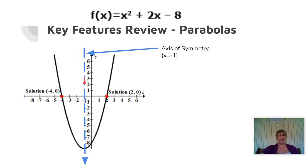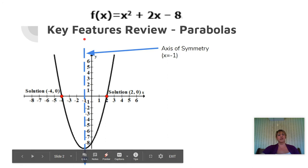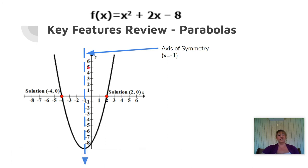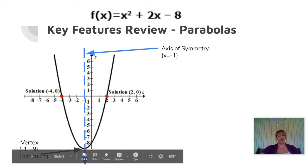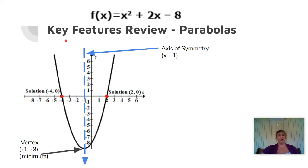Just to review: parabolas have in the middle what we call the axis of symmetry. Each side of the curve is equidistant from that axis — the same distance from the curve to that line and then across to the other side. In this particular function, the axis of symmetry occurs at x equals negative 1. Where the axis of symmetry crosses the parabola, we call that the vertex. Because our parabola is opening upwards, the vertex is the lowest point on our graph — it is a minimum — and our vertex is the point negative 1, negative 9.